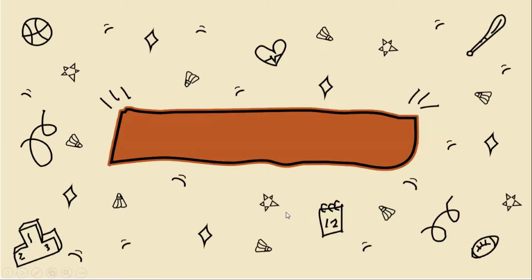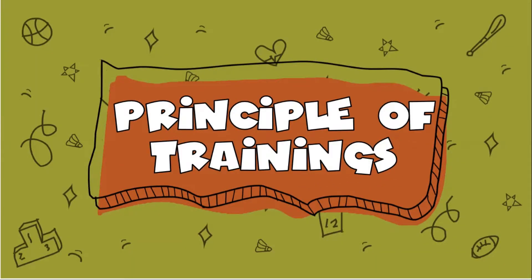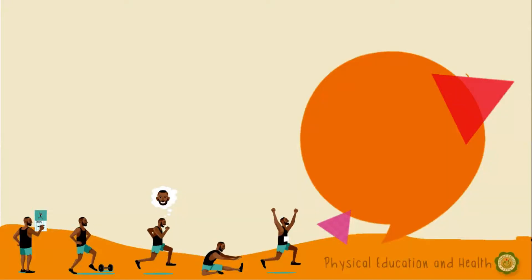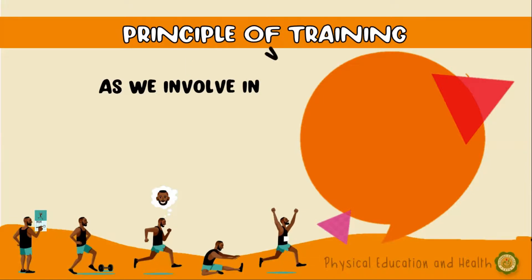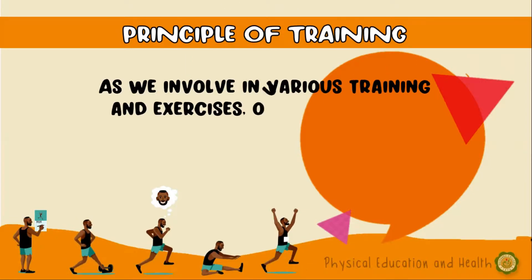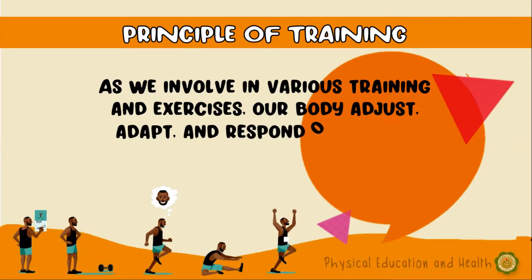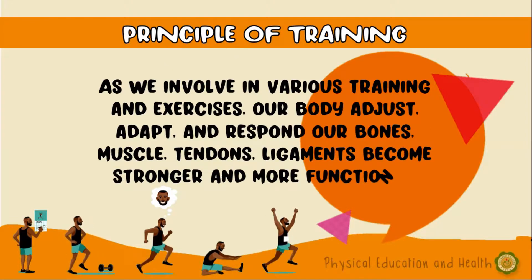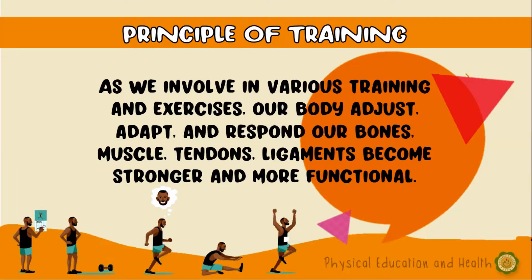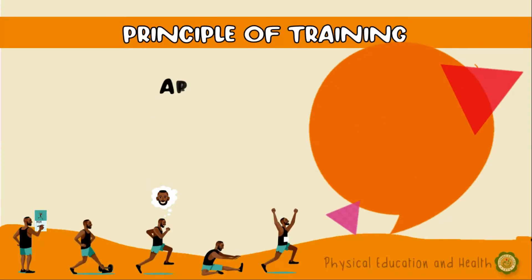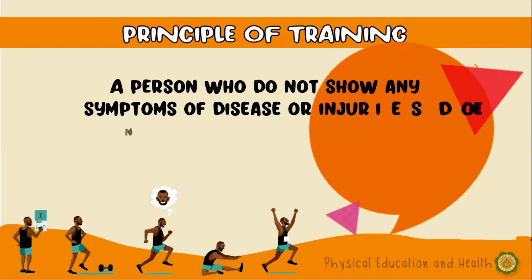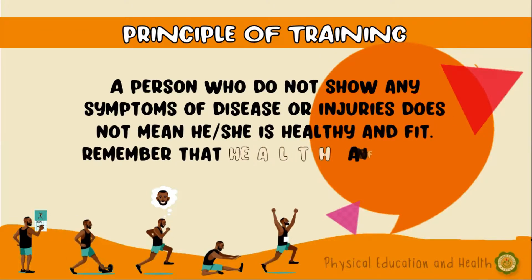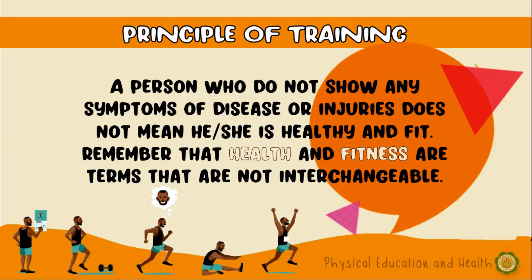Lesson number 2. Let's talk about Principles of Training. As we evolve in various training and exercises, our body adjusts and responds — our bones, muscles, tendons, and ligaments become stronger and more functional. The only way to achieve fitness is to progressively engage in activities that challenge the body. A person who does not show any symptoms of disease or injuries does not mean he or she is healthy and fit. Remember that health and fitness are terms that are not interchangeable.